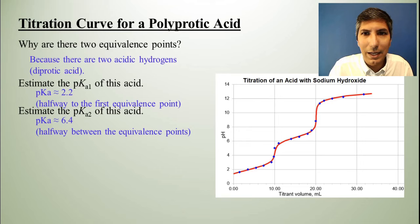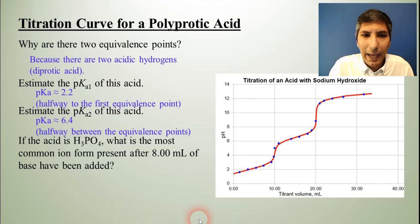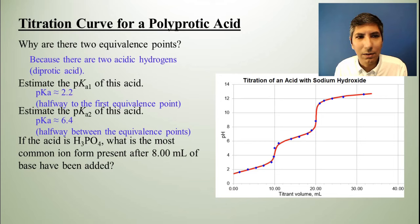Now let's imagine that this acid is H3PO4, phosphoric acid. Now this is probably a pretty good estimate because as it turns out, in phosphoric acid, you would probably see two hydrogens be removed over the course of the reaction. Well, what is the most common ion form present after eight milliliters of base have been added? Well, let's just take a look at how these work here, how these ions are removed.